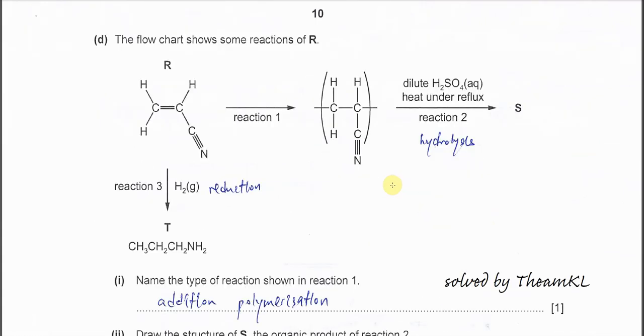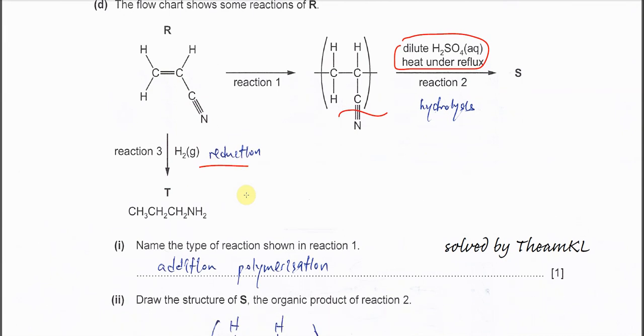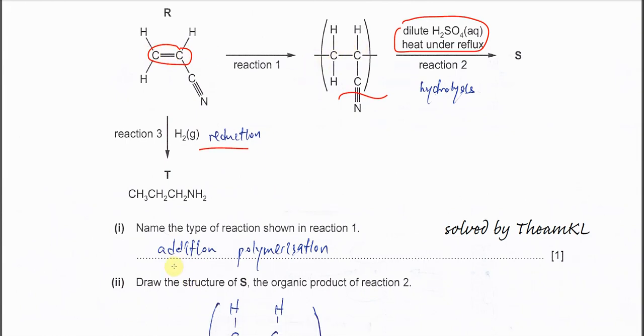Part D: the flow chart shows some reactions of R, which is this one with C=C double bond and nitrile. Reaction one we know is a polymerization. Pi bonds break and form tails from polymer structure. Reaction two is hydrolysis because it's dilute H2SO4 and reflux. The nitrile will break to form the carboxylic acid. For reaction three, from here we know that the double bonds and triple bonds are all saturated, so it's going to add a few hydrogens in there, so it's a reduction. Part one: name the type of reaction shown by reaction one. From these monomers, the C=C double bond to this polymer, this one is addition polymerization.